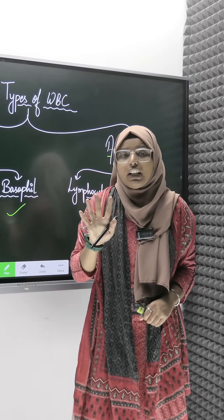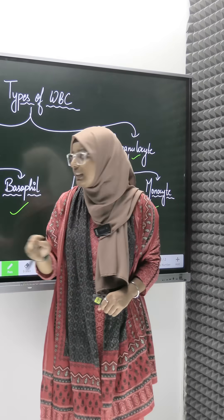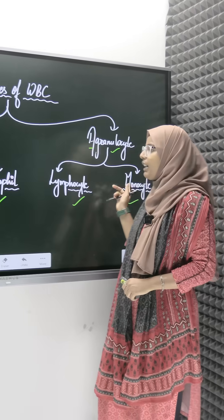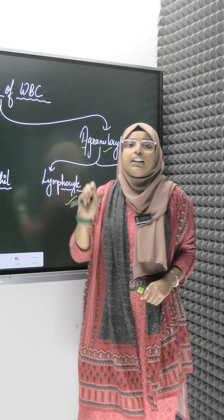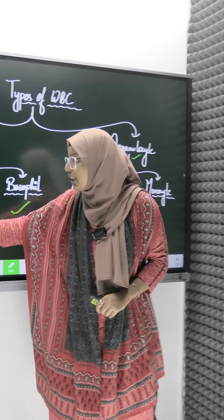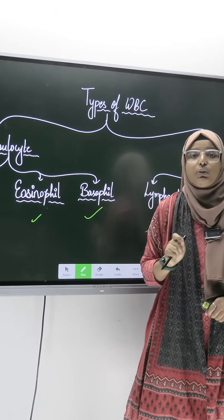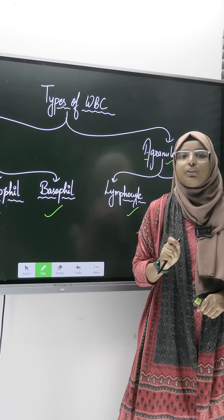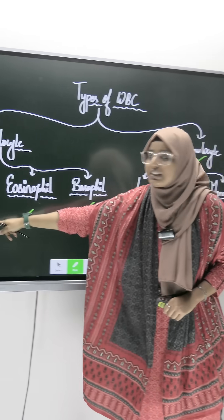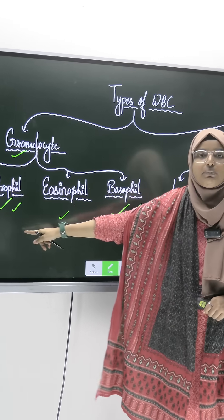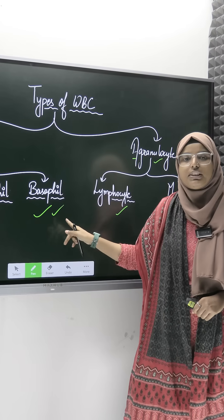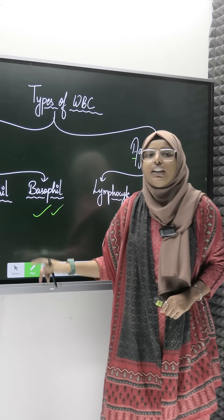So in total in the body, we have 5 types of WBC: Neutrophil, Eosinophil, Basophil, Lymphocyte, and Monocyte. The maximum amount present in WBC is Neutrophil and the minimum is Basophil — Neutrophil at 60-65% and Basophil at 0.5-1% of WBC present.